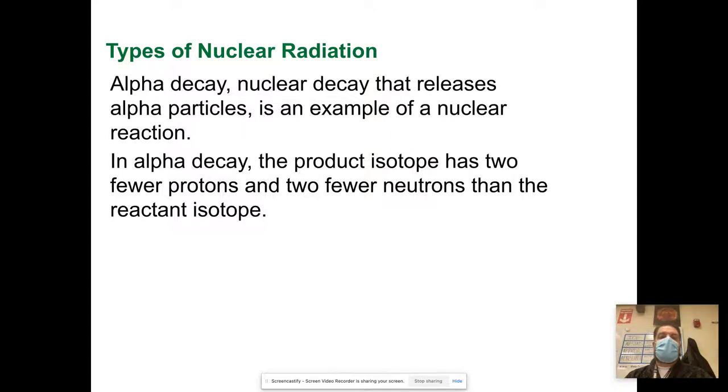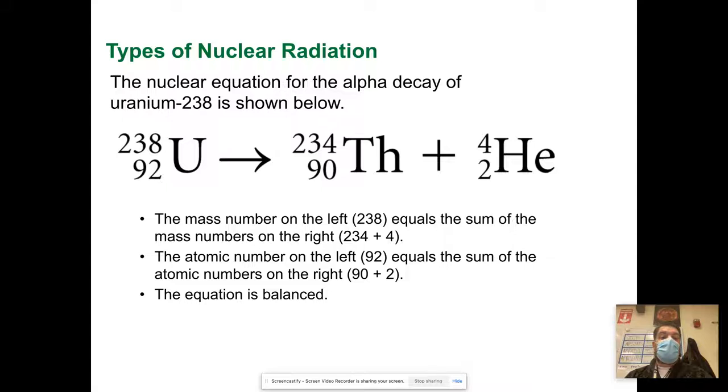Alpha decay, nuclear decay that releases alpha particles, is an example of a nuclear reaction. In alpha decay, the product isotope has two fewer protons and two fewer neutrons than the reactant isotope. When uranium-238 releases an alpha particle, it creates a helium atom and the thorium atom.